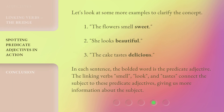Let's look at some more examples to clarify the concept. In each sentence, the bolded word is the predicate adjective. The linking verbs — smell, look, and tastes — connect the subject to these predicate adjectives, giving us more information about the subject.